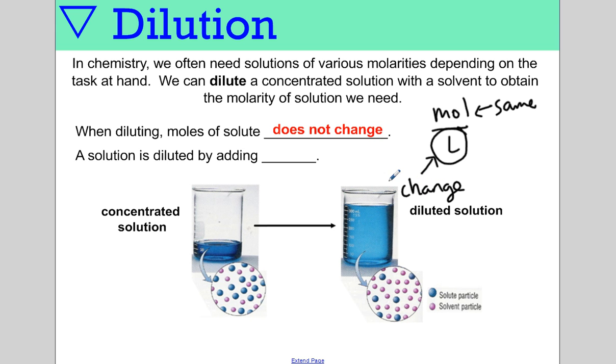If it's moles per liter, the volume is what you're changing, while the moles stay the same. Essentially what dilution is, is adding solvent. This often gets lost when we start working with math. What you're doing when you change concentration is you're changing the volume of the solvent, and that's all.